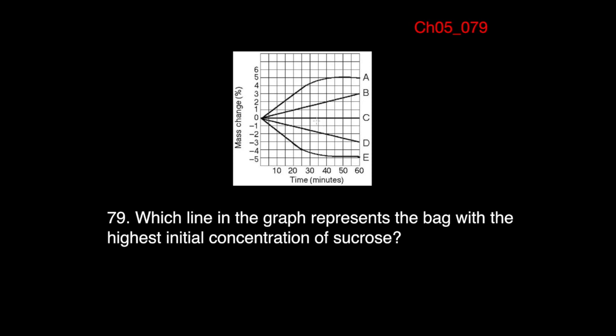Well, which one gained more mass? Obviously, A did. Because after 60 minutes, what happened? The mass change happened really, really fast. It's positive. Other ones, B is relatively slow. C is isotonic. D and E, it lost weight, meaning water left from the bag into the solution. So which one had highest concentration? Bag A.